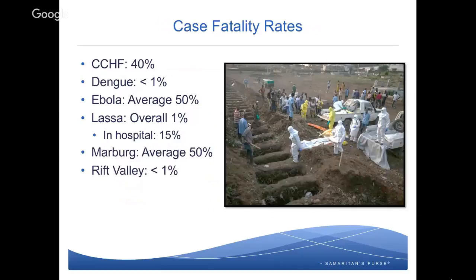Let's look at case fatality rates — a fancy way of saying the percentage of individuals who died out of an overall epidemic or outbreak. For CCHF it's about 40% — rather high. Dengue is actually less than 1%, though the more severe cases are slightly increased. Ebola's average is 50%. For Lassa fever, the overall is about 1%, but for those who present to the hospital — generally the more sick ones — the case fatality rate is about 15%. Marburg is an average of 50% as well, very similar to Ebola — they're actually very similar viruses. Rift Valley fever is less than 1%. So Ebola and Marburg have the highest case fatality rates.